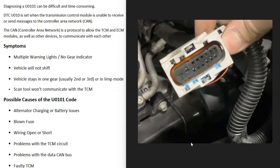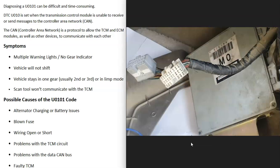If cleaning doesn't work, you're going to have to start tracing all the wires to make sure everything is doing what it's supposed to. This includes going back to the main computer and testing what's called the CAN bus, or controller area network. The CAN bus is basically the way all the computer modules talk to the main computer. So you'd be testing all the wires going back to the main computer.